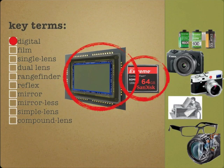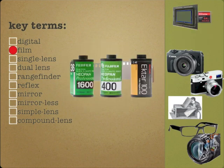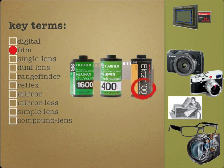Film records and stores the image. You'll notice that film has numbers printed on the canisters. In these examples, they are 1600, 400, and 100. You will need to become familiar with these numbers, as they are also used in digital photography — but we'll cover that later.